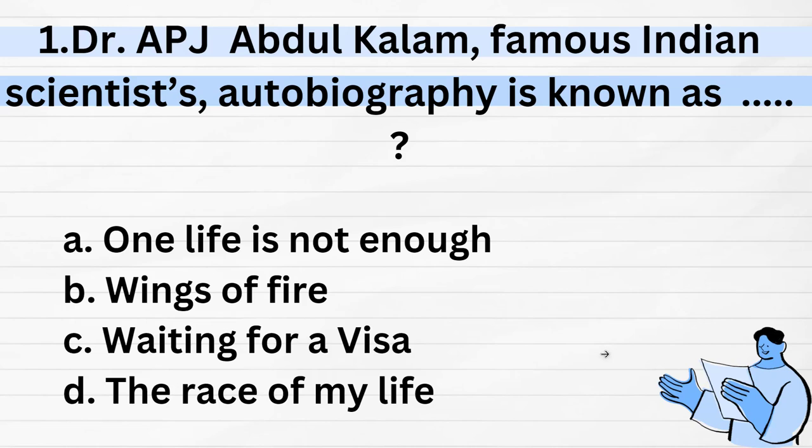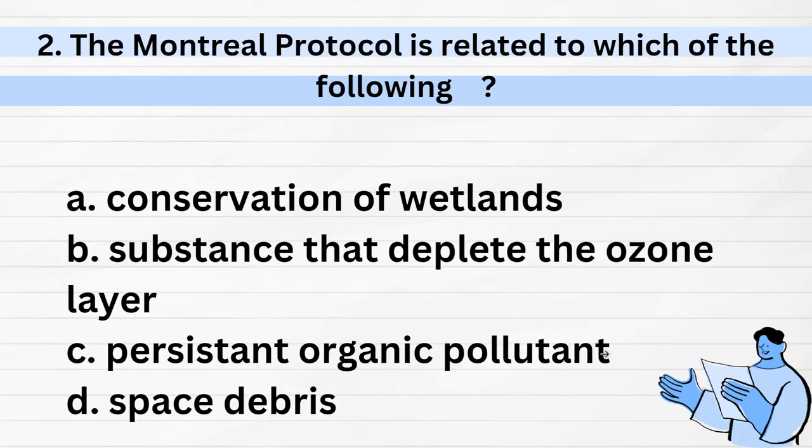Hi everyone, welcome to Ava Chan Ka Traffic Column. Today we are doing SSDGD previous year questions. First: Dr. APJ Abdul Kalam, famous Indian scientist — his autobiography is known by which name? Options: one, Life is Not Enough; two, Wings of Fire; three, Waiting for a Wizard; four, The Race of My Life. Answer: option B, Wings of Fire.